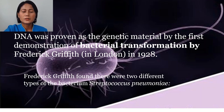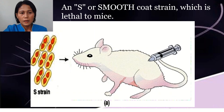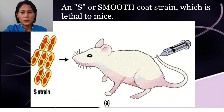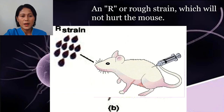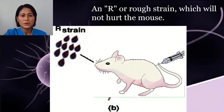Friedrich Griffith found that there were two different types of Streptococcus pneumoniae. One is a smooth strain, which is lethal to mice — it died after being injected with the smooth strain. Another strain is rough, which does not hurt the mouse. In other words, the rough strain is non-pathogenic, and the smooth strain is the pathogenic strain.